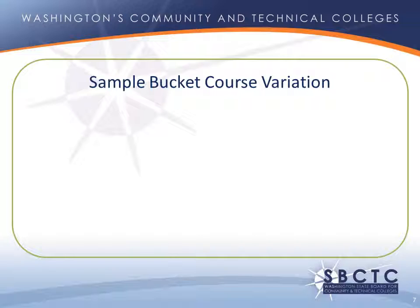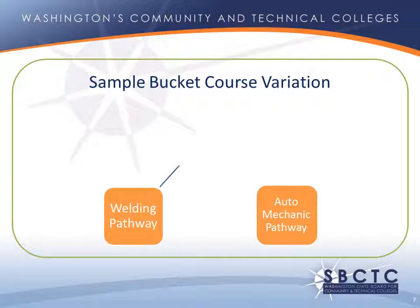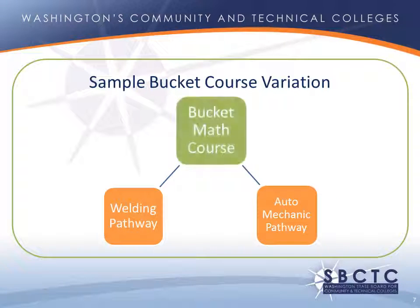In a slight twist on the model, it is also possible to have a bucket math or English course that is not exclusively attached to a single career pathway, but is instead contextualized to multiple career pathways. For example, if you have a career pathway for welders and for automotive mechanics, you might have a math bucket course that is contextualized to both of those trades, offering students the chance to learn math in a way that is applicable to their career of choice.